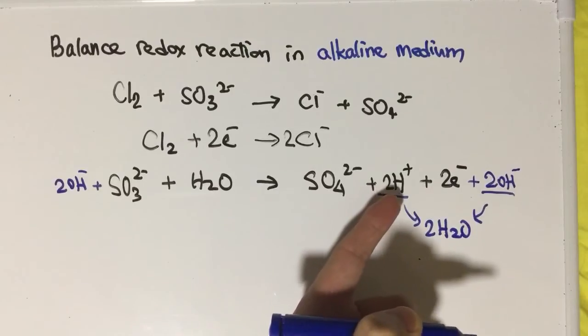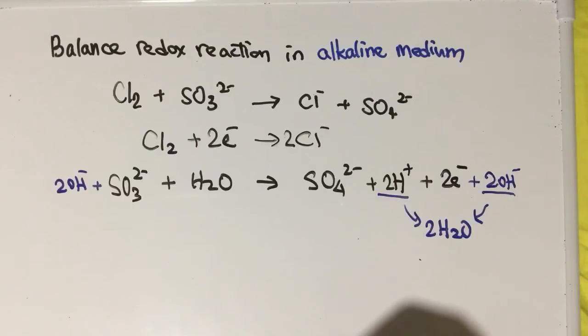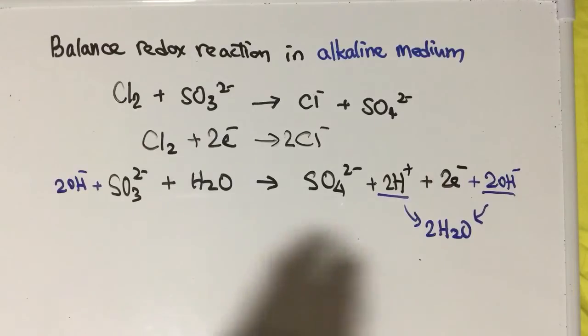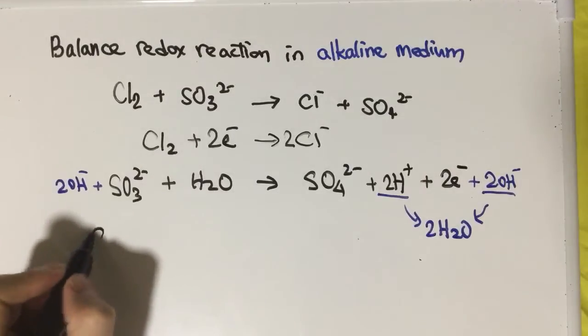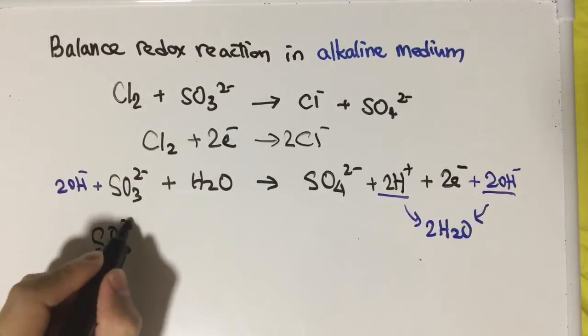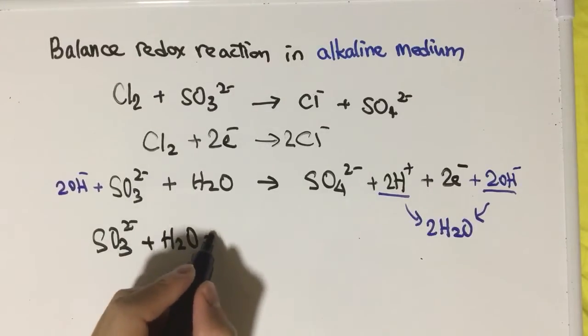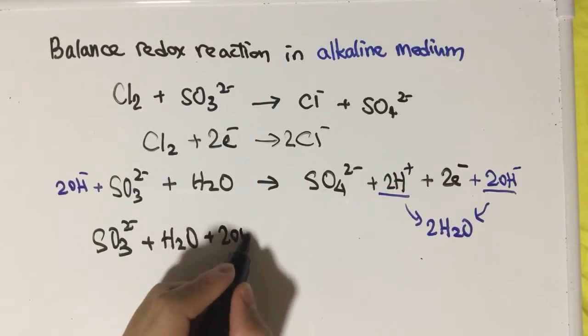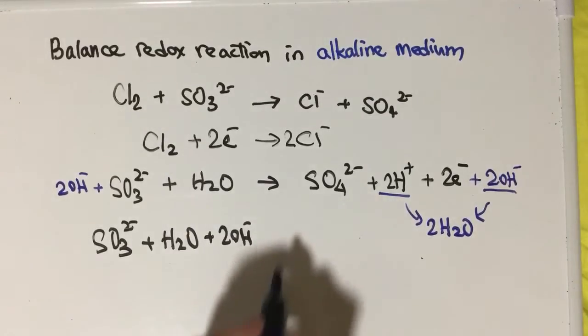After that, we can rewrite the ionic half-equation of sulfite ion. It will be SO₃²⁻ + H₂O + 2OH⁻, which is what we added just now.